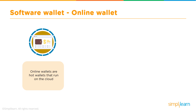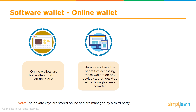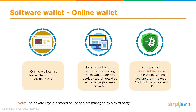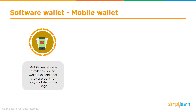Online wallets are hot wallets that run on the cloud and are available on the internet. Users can access these wallets across any device — tablet, desktop, or mobile browser. The private keys are stored online and are managed by a third party, so you have to be dependent on a third-party service. For example, Green Address is a Bitcoin wallet available on the web, with an Android app, a desktop version, and iOS support.